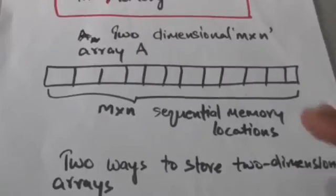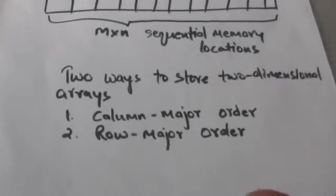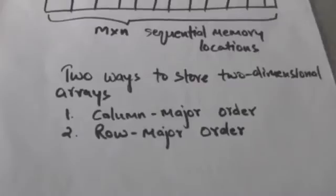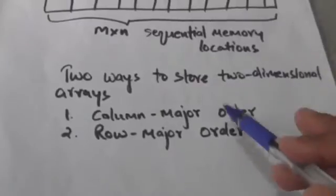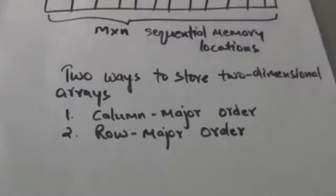There are two ways to store a two-dimensional array in memory: one is column major order and another is row major order.